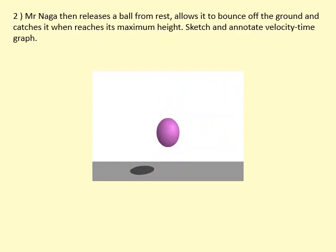Next question: what happens when a ball is released from rest, so it means starting velocity equals 0, and then it bounces off the ground, and when it comes back up to its maximum height, it's caught.